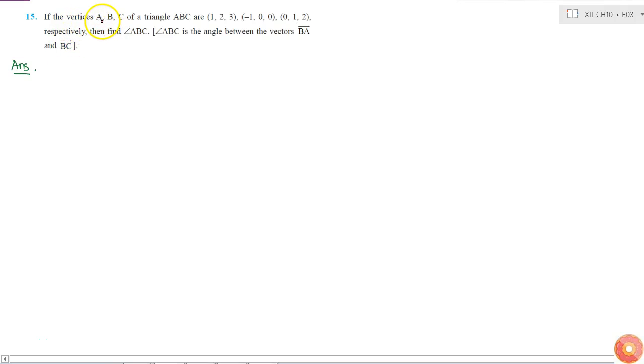Here we are given the coordinates of the three vertices A, B, C of triangle ABC. A is (1, 2, 3), B is (-1, 0, 0), and C is (0, 1, 2).